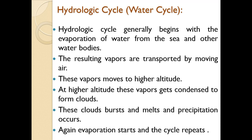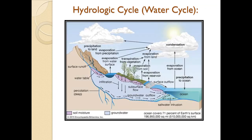These clouds collide, burst, and melt, and in turn precipitation occurs. After the occurrence of precipitation, some part gets intercepted, some part infiltrates into the ground, and the excess water moves on the surface in the form of surface runoff. With the help of this runoff, water bodies develop again, and from these water bodies evaporation occurs again, repeating the water cycle.